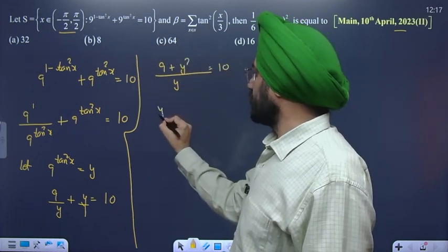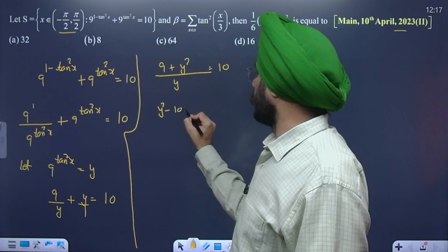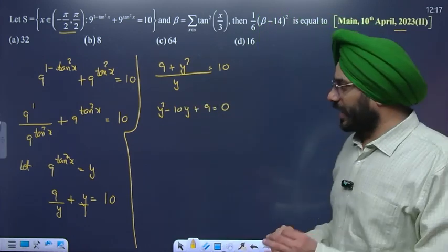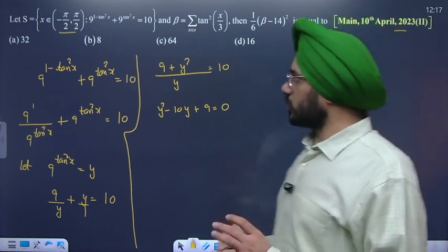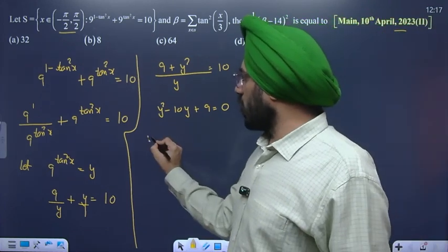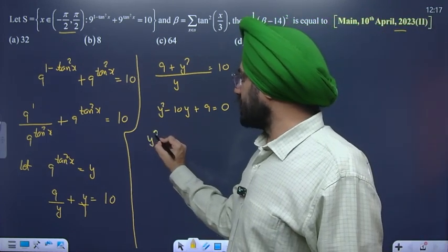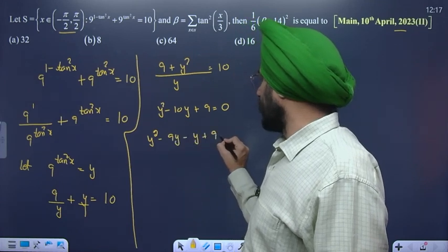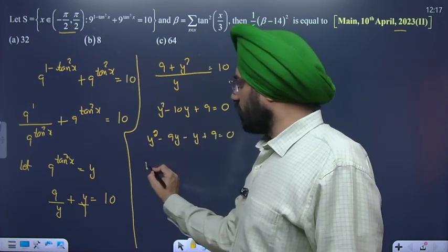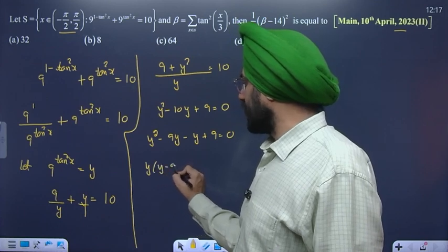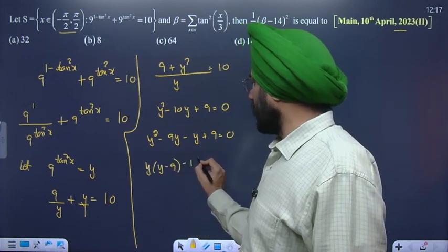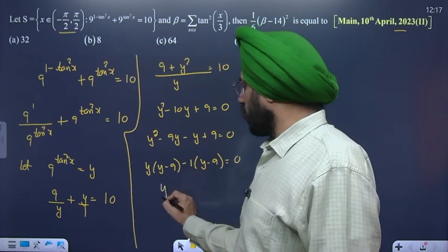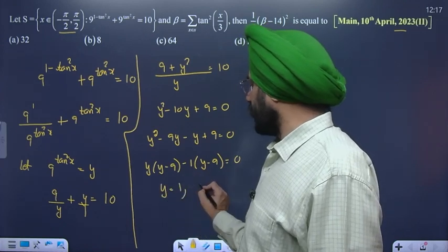So the equation becomes y² - 10y + 9 = 0. Factoring: y(y - 9) - 1(y - 9) = 0, giving (y - 1)(y - 9) = 0. Therefore the value of y is 1 and 9.